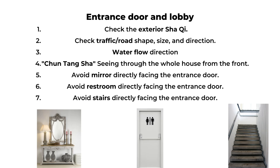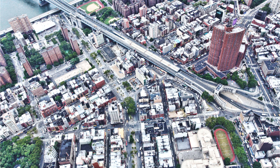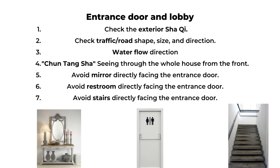Now we'll look at the interiors, starting with the entrance and lobby area. First, look at the view from the main entrance door — is it a beautiful and open view, or are there problematic structures like a building corner, a cell phone tower, or tall chimneys? Look at the traffic and road in front. The road is like water in feng shui and can be a symbol of wealth. We want the road to flow in front gently, maybe with a little curve, but not with extreme curves or very heavy traffic. If there's actual water, make sure the water is not flowing away from the house — that can mean money flowing away from you.